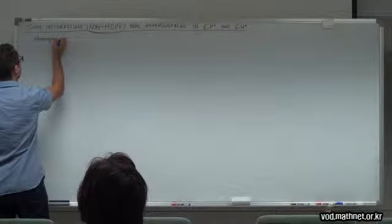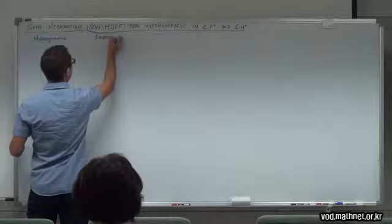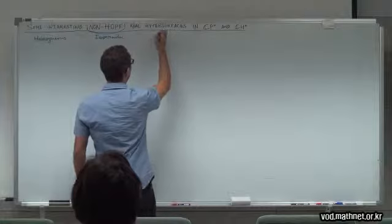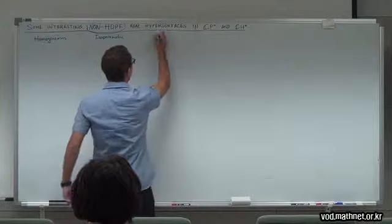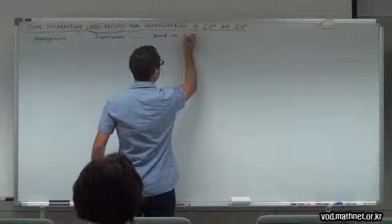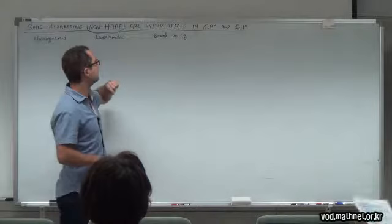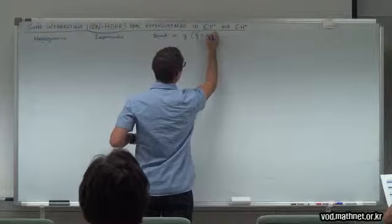What I want to tell you in this talk is to give you some interesting examples of non-Hopf real hypersurfaces in the non-flat complex space forms, particularly related to: homogeneous hypersurfaces, then isoparametric hypersurfaces, and lastly real hypersurfaces with a bound G on the number of principal curvatures — in this case exactly G equal to 2.